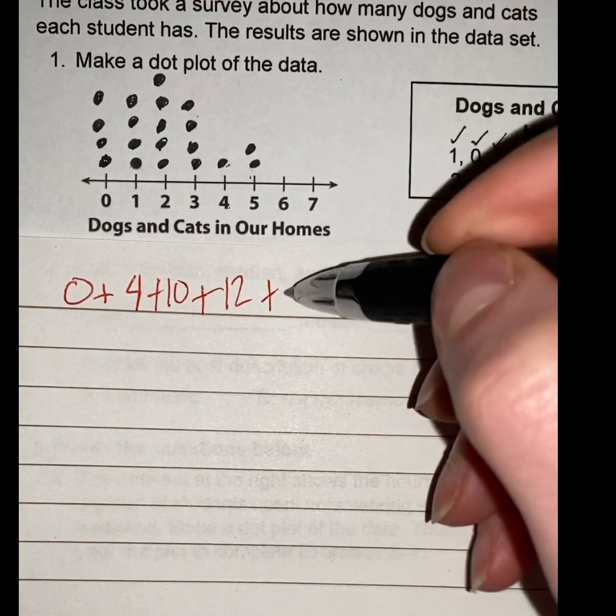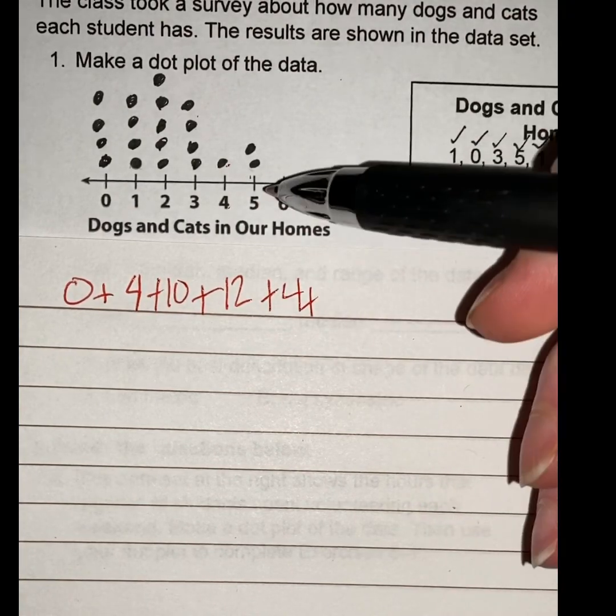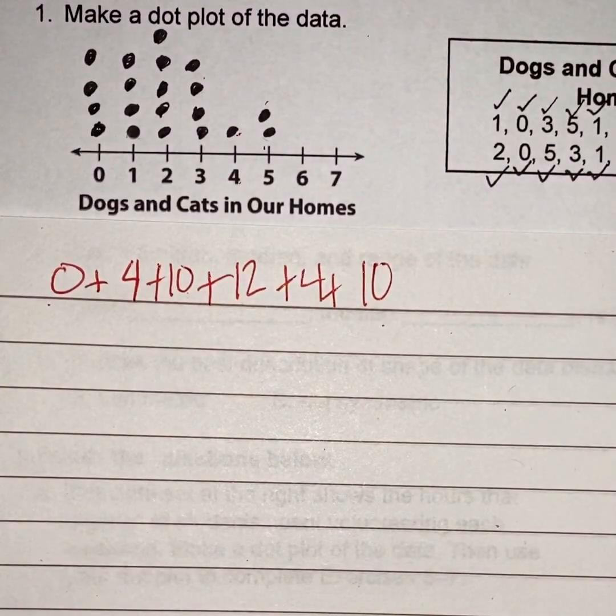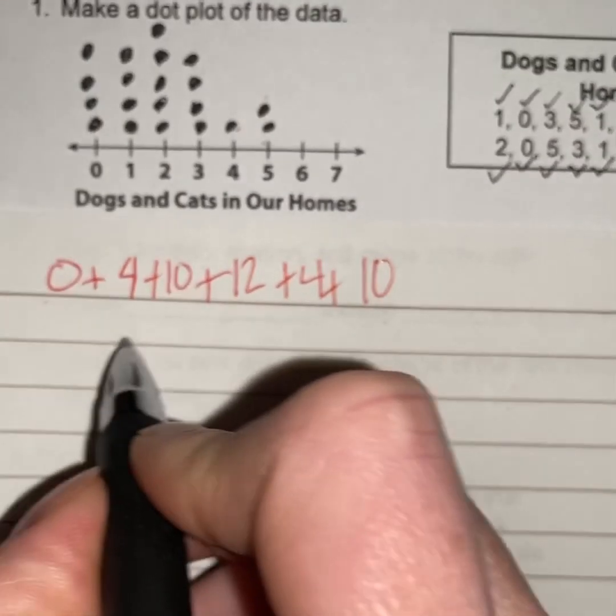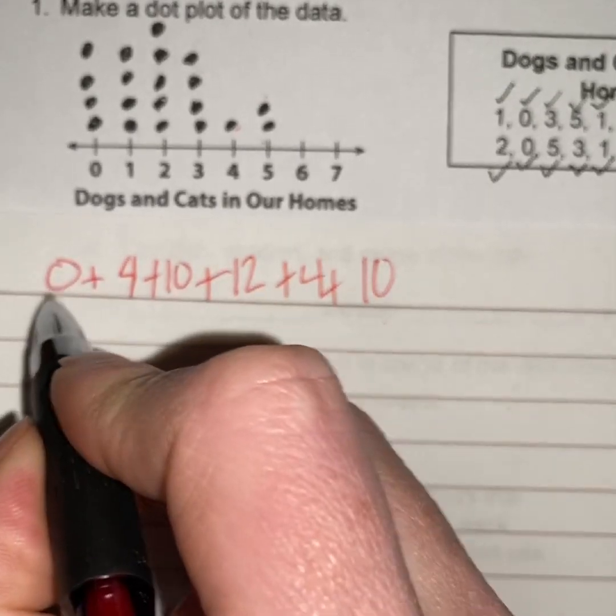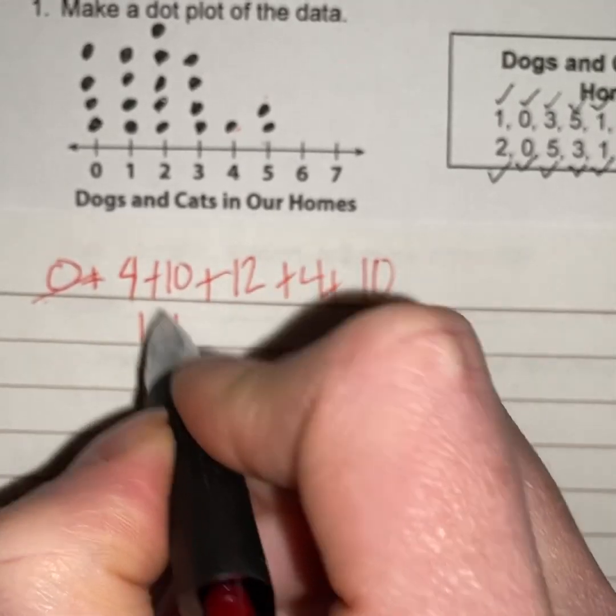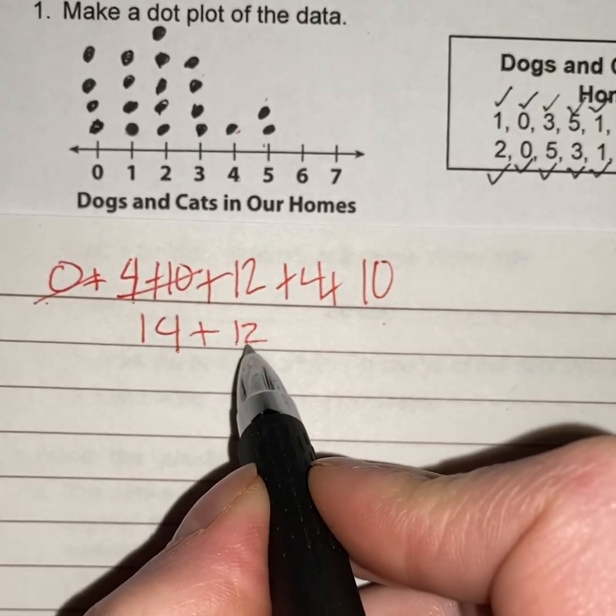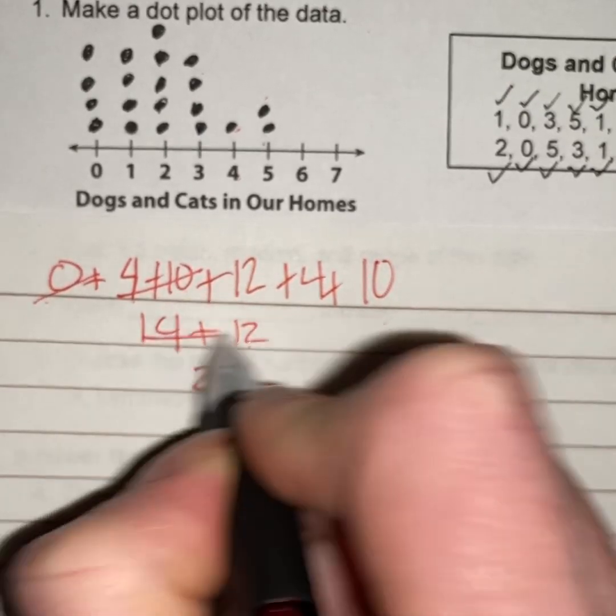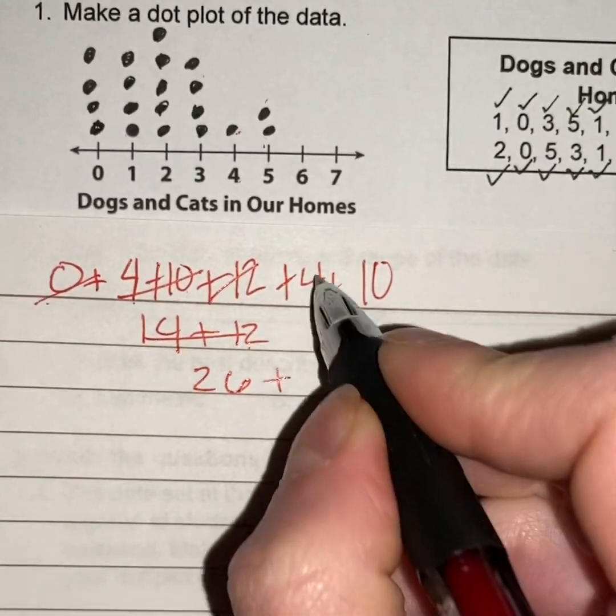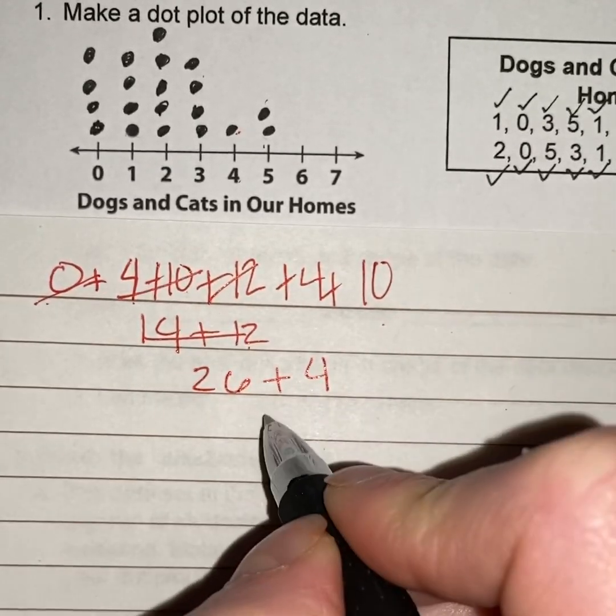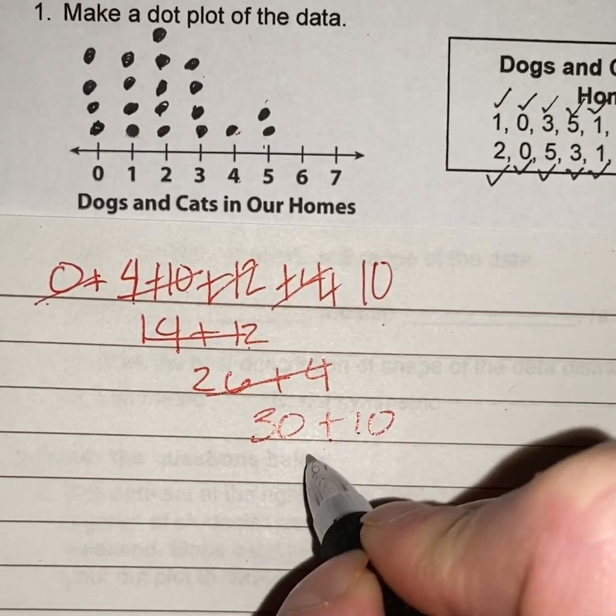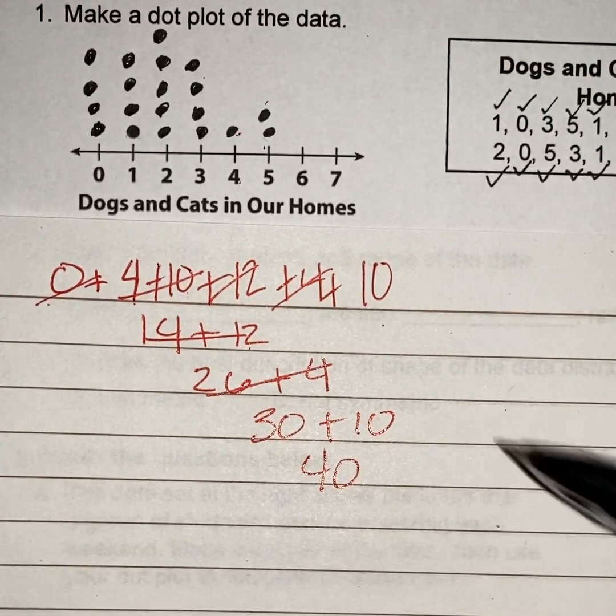Plus one four, plus one four, plus two five which is ten. Now I'm going to add these up. So zero plus nothing, it doesn't matter. Four plus ten is fourteen, mark that out. Plus twelve, fourteen plus twelve is going to be twenty-six.